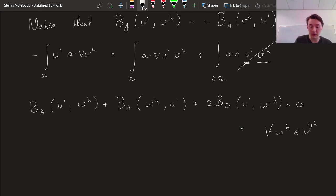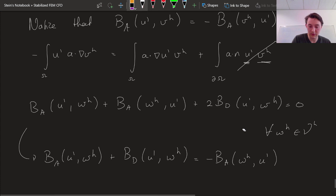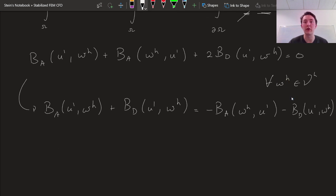And then you find a new statement. So I can rewrite this a little bit and I can say, well, B A of U' comma W H plus, I'm going to take one of these guys, B D of U' comma W H. And then I'm going to move the other ones to the right. And I'll find that this is going to be equal to minus B A W H comma U' plus, no, sorry, still minus, minus B D U' comma W H. And this also has to be true for all W H in V H.